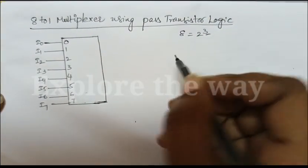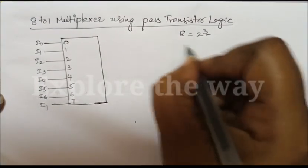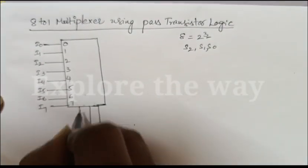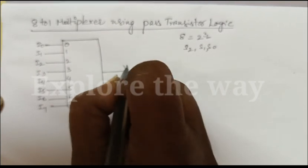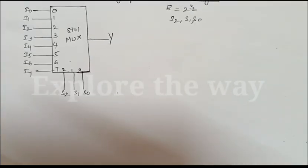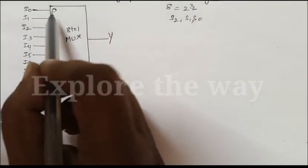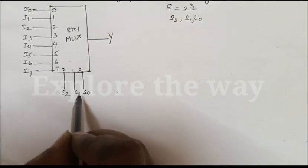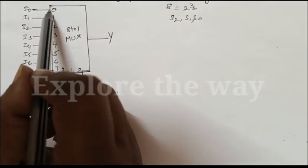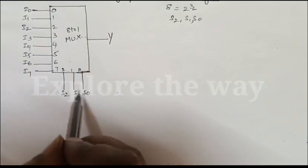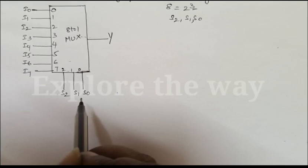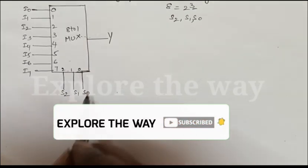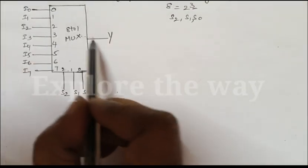Here, 3 is the number of select lines. So s2, s1, and s0 are the select lines, and it has one output y. Its functionality is based on these select lines — one of the inputs is routed to the output. If the inputs are 0 0 0, its decimal equivalent is 0, so the 0th input is routed to the output. If the input is 1 0 0, its decimal equivalent is 4, then the 4th input will be routed to the output.